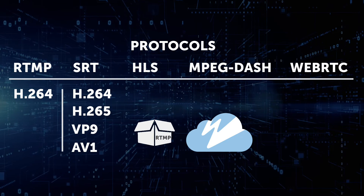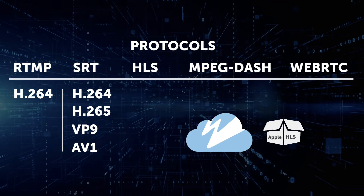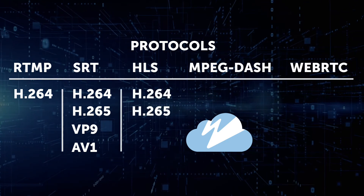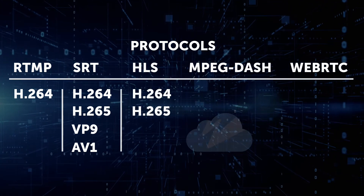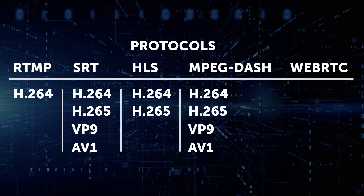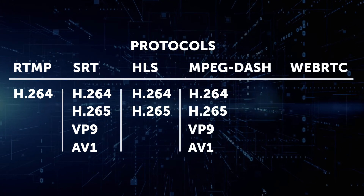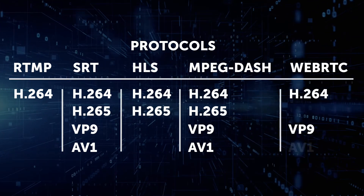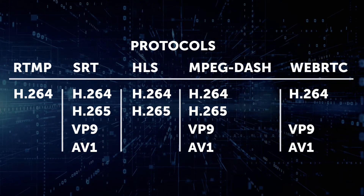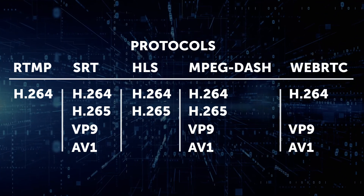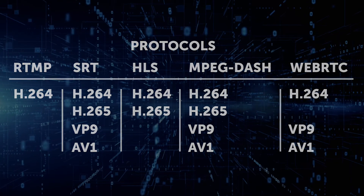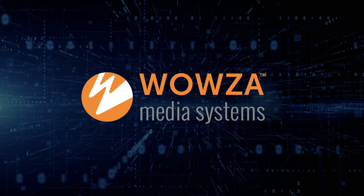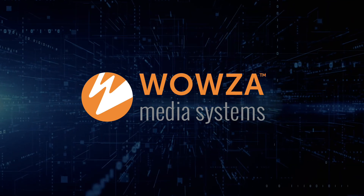A streaming platform can take the original stream and repackage it into different playback protocols. This might be HLS, which supports both H.264 and H.265, or MPEG-DASH, which like SRT is codec agnostic, or even WebRTC which handles H.264 and VP9. AV1 support is also on the horizon. That's it for how video encoding works in the world of live streaming. If you'd like to learn more to help pick the right codecs and protocols for your live streaming needs, please contact us at Wowza.